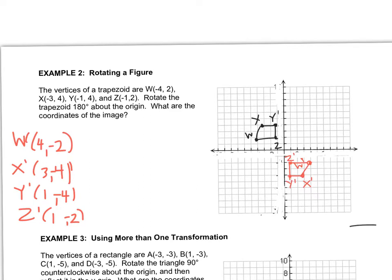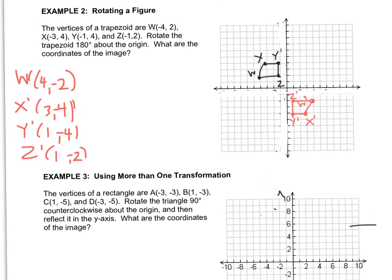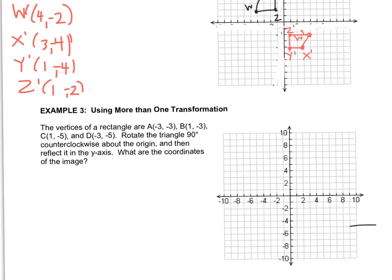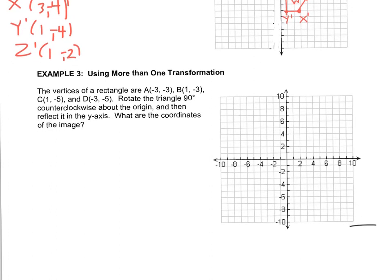And we already have the coordinates because we did that first. Alright, let's move on to example 3. The vertices of a rectangle are A negative 3, negative 3, B negative 3, C negative 5, and D negative 3, negative 5. Rotate the triangle 90 degrees counterclockwise and then reflect it in the y-axis. So we're doing two things. What are the coordinates of the image? So what they're actually asking you here is like the final image. So they don't need the coordinates beforehand. We might need to get them, but the answer is going to be that very last image. So first thing we're going to do is pause the video and plot A, B, C, D.